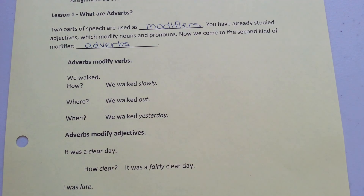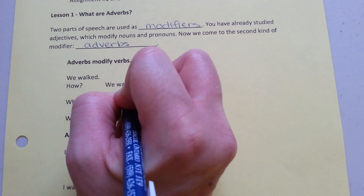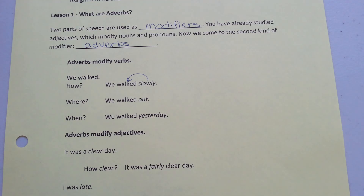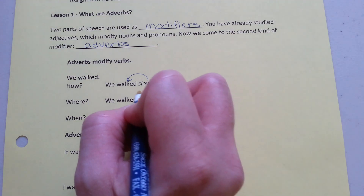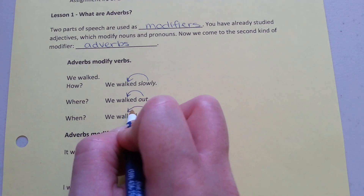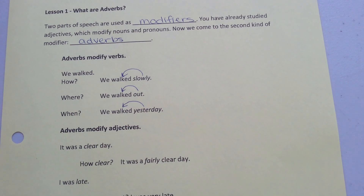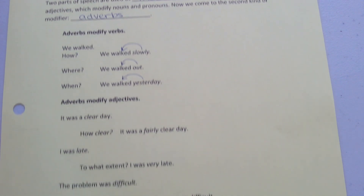Let's look at some examples. First off, adverbs modify verbs. We walked — how did you walk? We walked slowly, so slowly modifies walked. Where? We walked out. When? We walked yesterday. These are questions that adverbs answer.